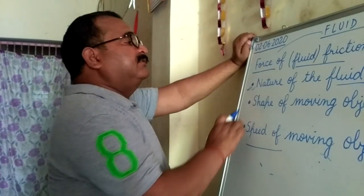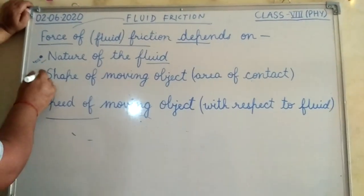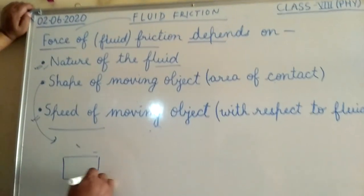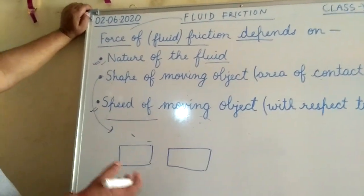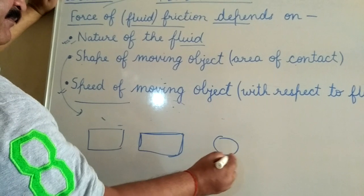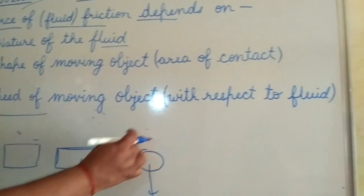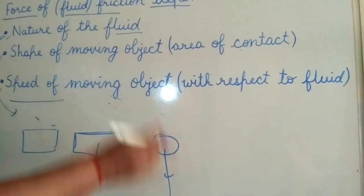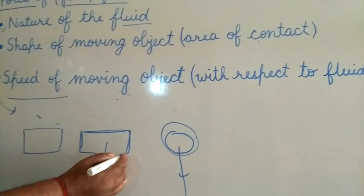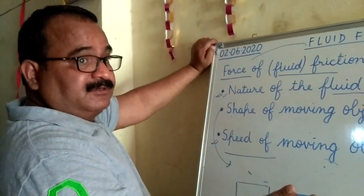These three are the factors that change the force of fluid friction. One activity that confirms the effect of shape: take two pieces of paper of the same size. Make one into a round ball shape and leave the other flat. Drop both from the same height toward the earth. You will see that the round paper ball, which has less surface area, falls to the earth much more quickly than the flat unfolded piece of paper, because the flat paper has a larger area.